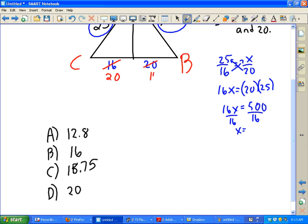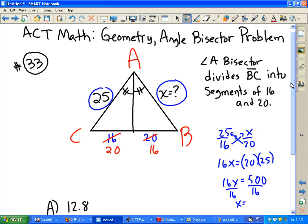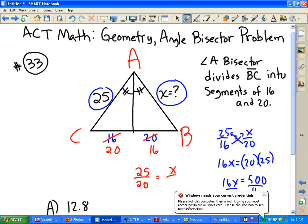Put a 20 here and a 16 here since it wasn't specified. So if we do that, we now have 25 is to 20 as X is to 16.